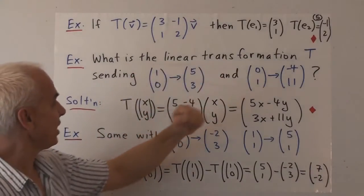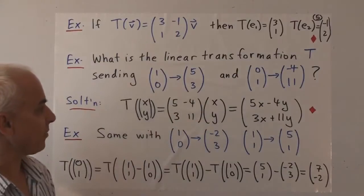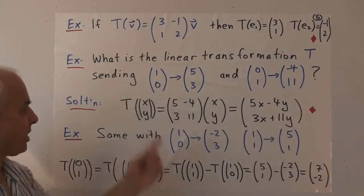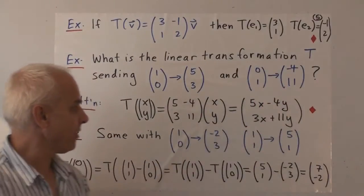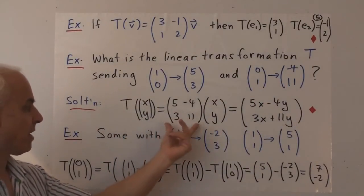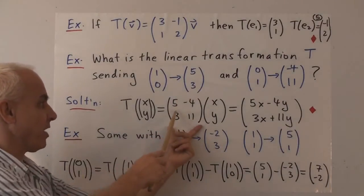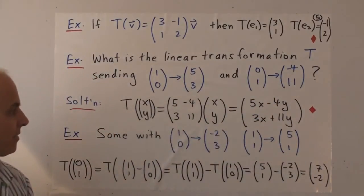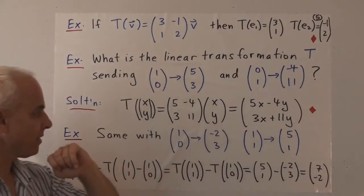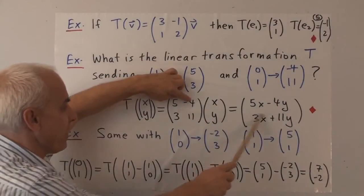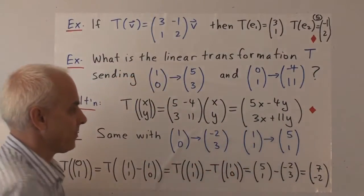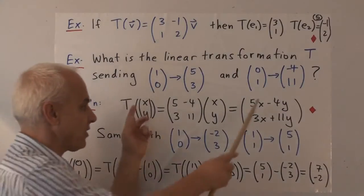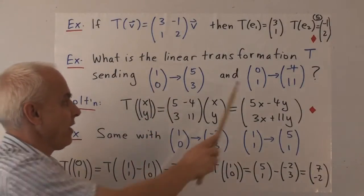Here's another question: what is the linear transformation T sending (1,0) to (5,3) and (0,1) to (-4,11)? Now we know T of E1 = (5,3) and T of E2 = (-4,11). So our transformation is multiplication by the matrix whose first column is (5,3) and second column is (-4,11). Multiplying that matrix by the vector (x,y) gives (5x minus 4y, 3x plus 11y).